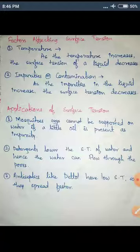What are the applications of surface tension? We have all seen where mosquitoes lay their eggs — on stagnant or waste water. The mosquito eggs are very light and are supported on the water surface due to the high surface tension of water. To prevent this, oil is sprayed on water surfaces where mosquito eggs are laid. When oil is sprayed, surface tension decreases, and the mosquito eggs sink into the water.